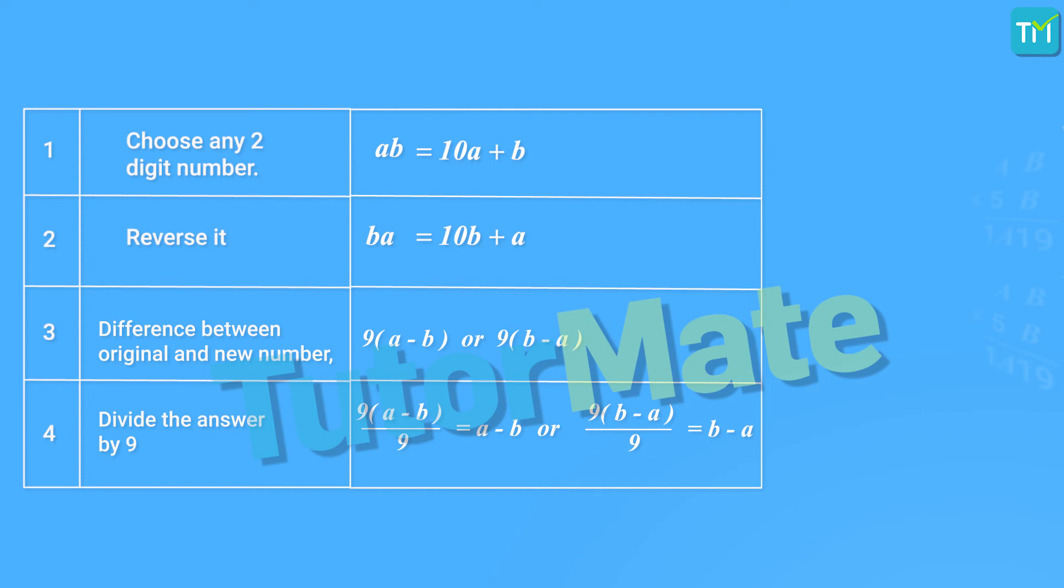If A is greater than B, then the quotient will be A minus B. Else, if B is greater than A, then the quotient will be B minus A. Interesting, right?